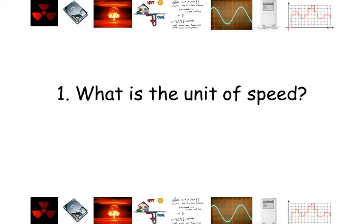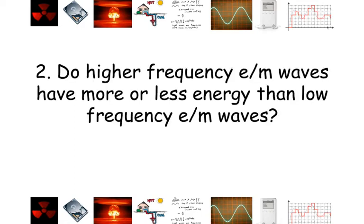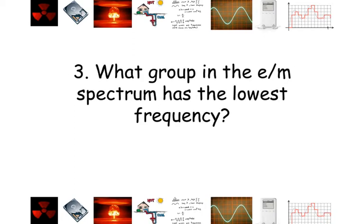Question number one: what is the unit of speed? Question number two: do higher frequency electromagnetic waves have more or less energy than low frequency electromagnetic waves? Question number three: what group in the electromagnetic spectrum has the lowest frequency?